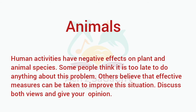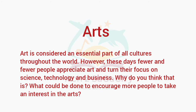Next topic: Animals. Human activities have a negative effect on plant and animal species. Some people think it is too late to do anything about this problem; others believe that effective measures can be taken to improve the situation. Discuss both arguments and give your opinion — this is also a discussion-with-opinion type question.